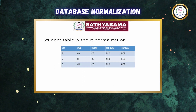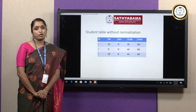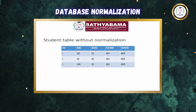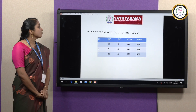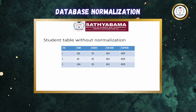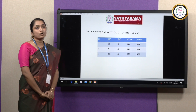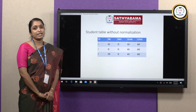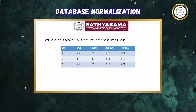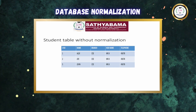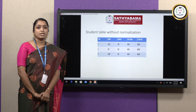Here is a student table without normalization. You can see the columns are serial number, name, branch, HOD name, and telephone. If we are adding students to this table, you can see the last three columns are repeating — branch, HOD name, and telephone are common to all students. In an entire university with thousands of students, the same data is repeated for all thousand entries. That is redundancy — it is an undesirable property.